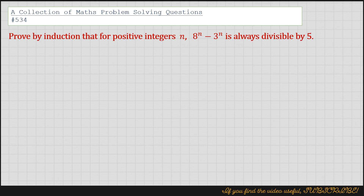Proof by induction that for positive integers n, 8 to the power n minus 3 to the power n is always divisible by 5.